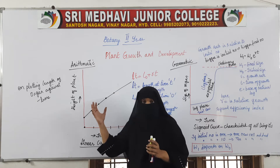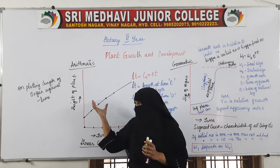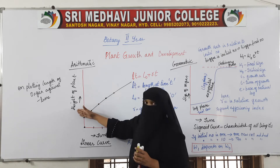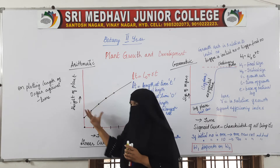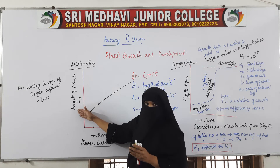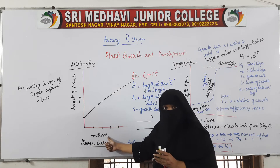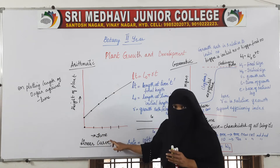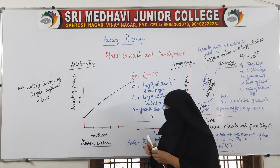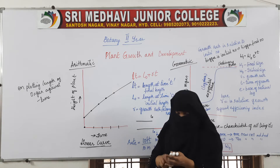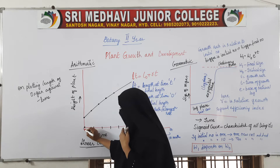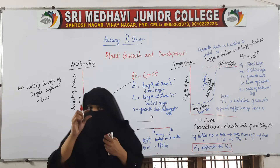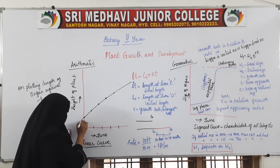When we plot the growth rate in the form of a graph, on one side we put the height of the plant and on the other side we have time. For arithmetic growth rate, when we plot length against time, we get a linear curve. The initial height at time zero is some value, not nil, and the plant grows from there.